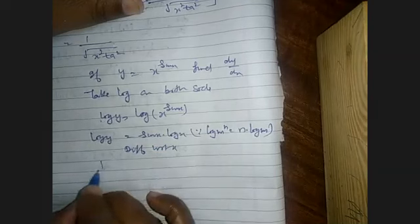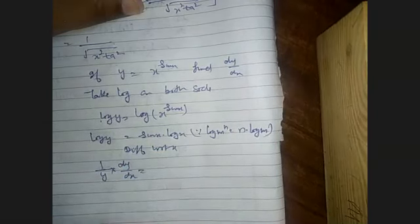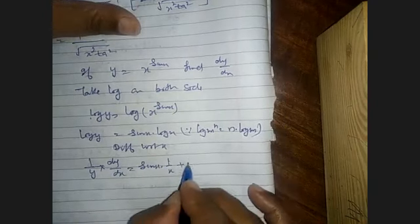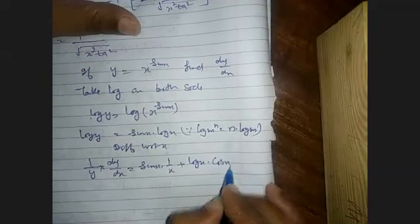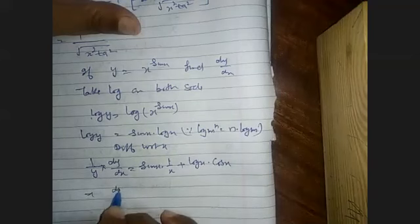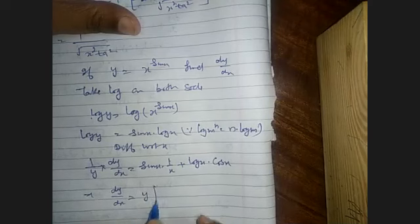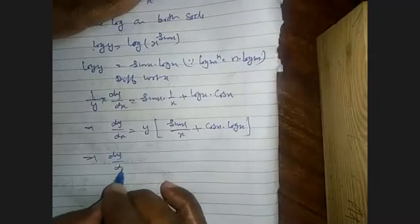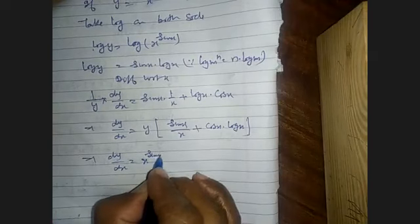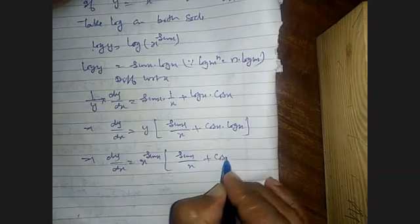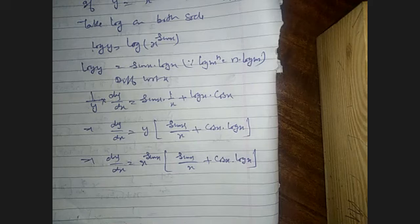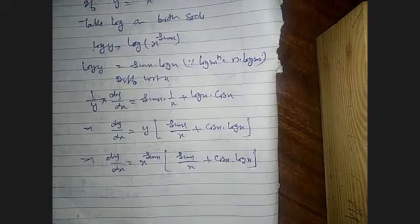Differentiating with respect to x: 1/y · dy/dx = sin x · (1/x) + log x · cos x. Therefore dy/dx = y · (sin x / x + cos x · log x). Substituting y = x^(sin x): dy/dx = x^(sin x) · (sin x/x + cos x · log x).